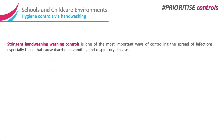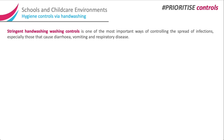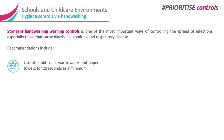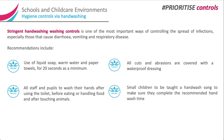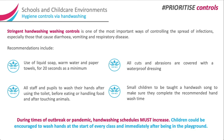Hygiene controls via hand washing. Stringent hand washing is one of the most important ways of controlling the spread of infections, especially those that cause diarrhoea, vomiting and respiratory disease. Recommendations include: use of liquid soap, warm water and paper towels for 20 seconds as a minimum; all cuts and abrasions covered with a waterproof dressing; all staff and pupils to wash their hands after using the toilet, before eating or handling food, and after touching animals. Small children should be taught a hand wash song to complete the recommended hand wash time. During times of outbreak or pandemic, hand washing schedules must increase, and children could be encouraged to wash hands at the start of every class and immediately after being in the playground.